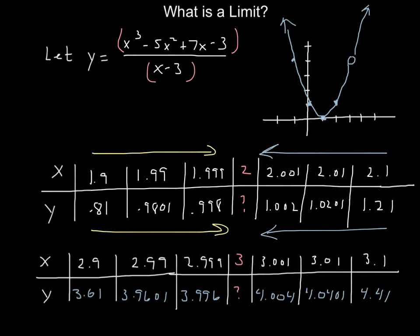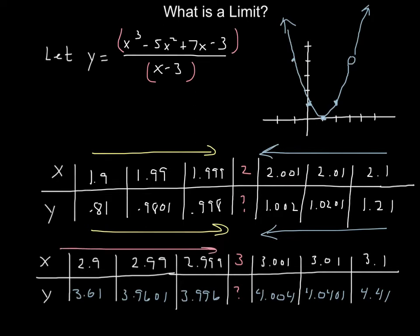Let's take a look at x approaching 3. Remember, this function is not defined at 3, but that doesn't mean we can't have a limit there. Starting from the left with 2.9, 2.99, 2.999, I get 3.61, 3.9601, and 3.996. Coming from the right I get 4.41, 4.041, and 4.004. So as I move closer and closer to 3 from both directions, my function values approach 4. The limit as x approaches 2 was 1; the limit as x approaches 3 is 4.